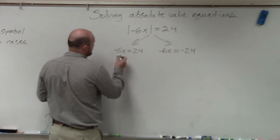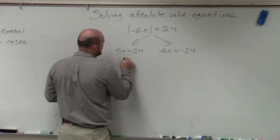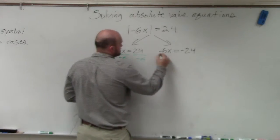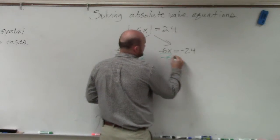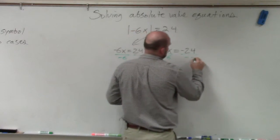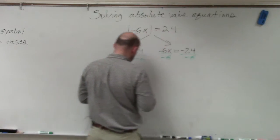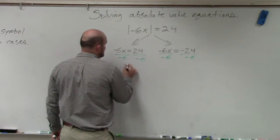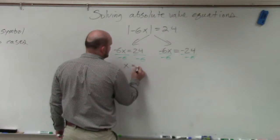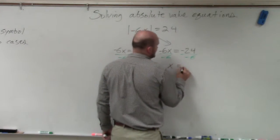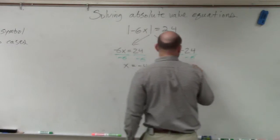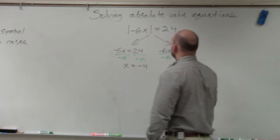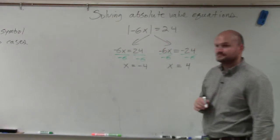So we divide by negative 6 on both sides. What we get is x is equal to negative 4, and x is equal to positive 4.